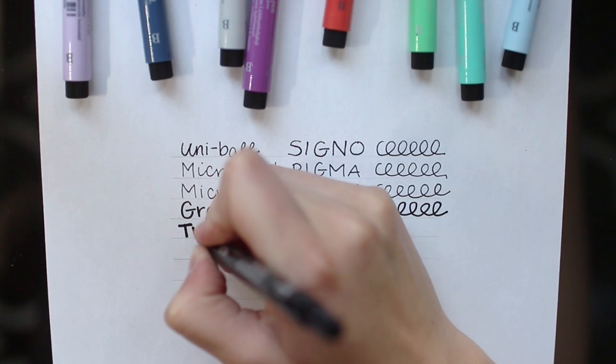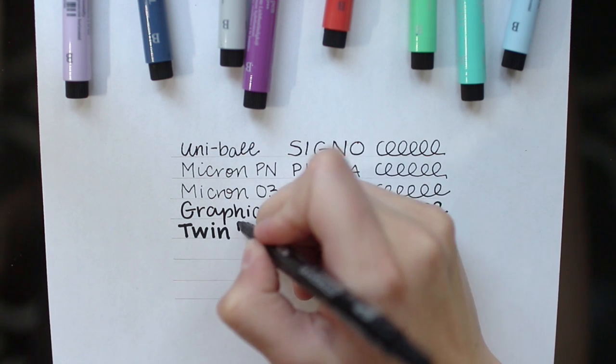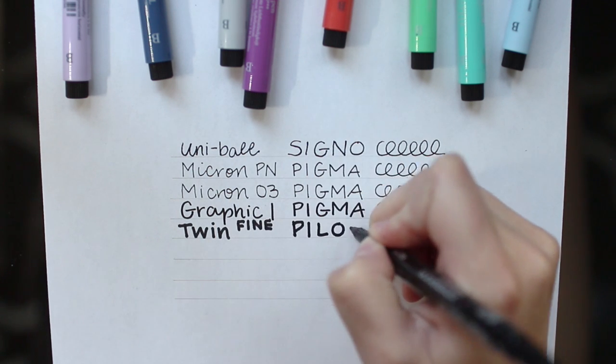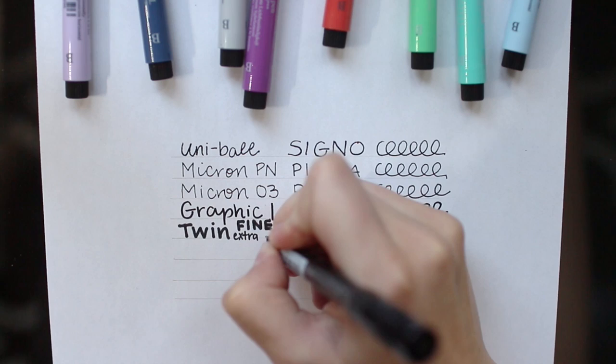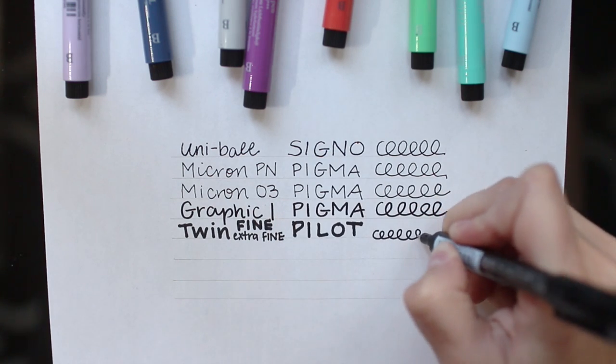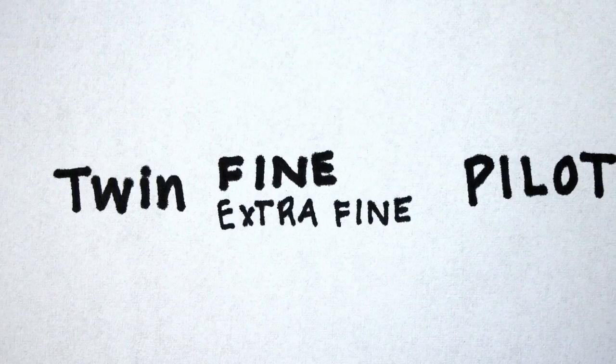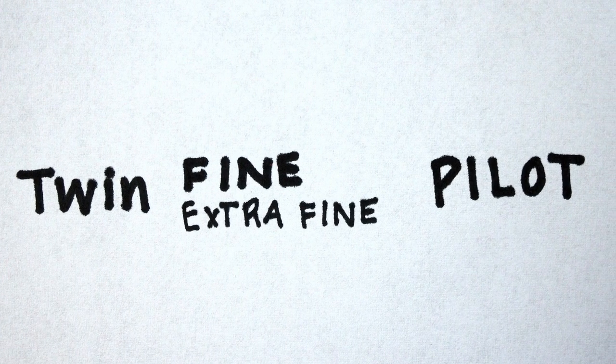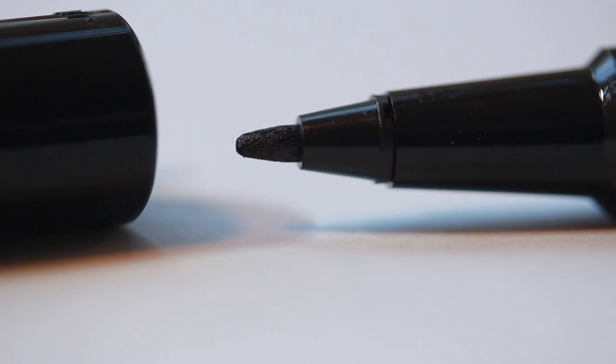Next we have the Pilot oil-based twin marker. This pen is double-sided. I almost gave up on this pen because when you draw with it on paper like this it does have some feathering. And what I mean by that is if you look really close, there's almost these hair-like lines that stick out from the original line you drew.